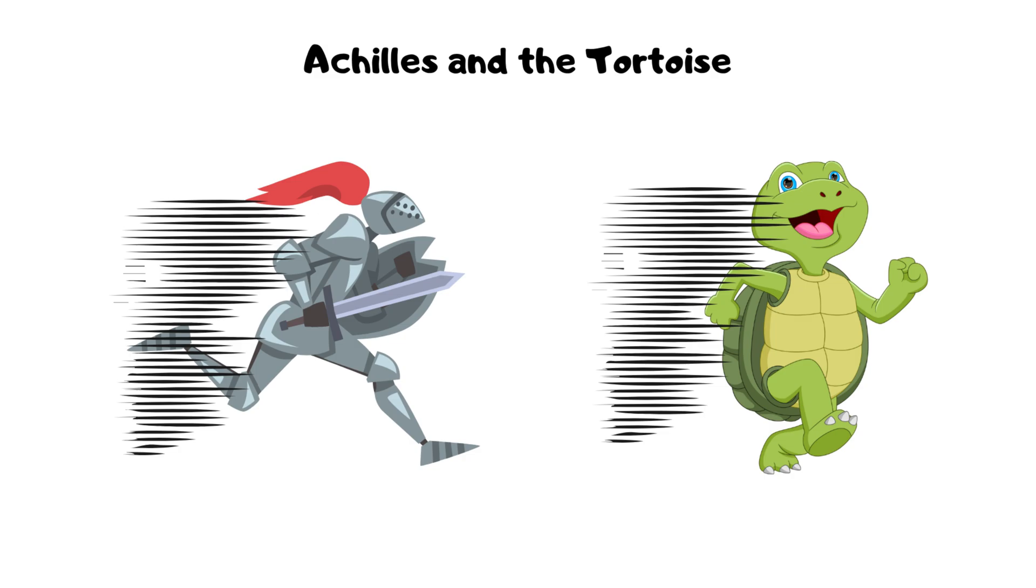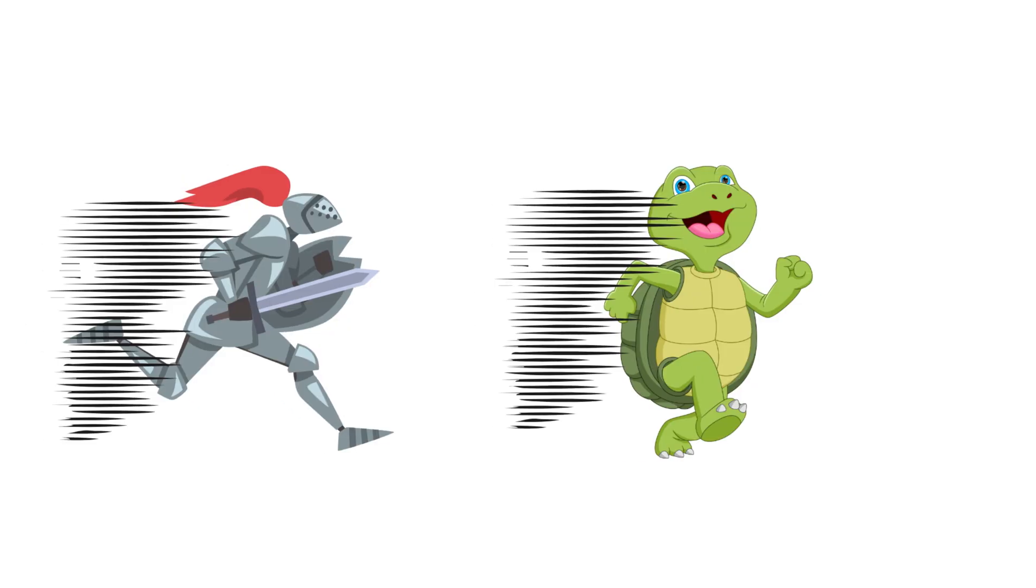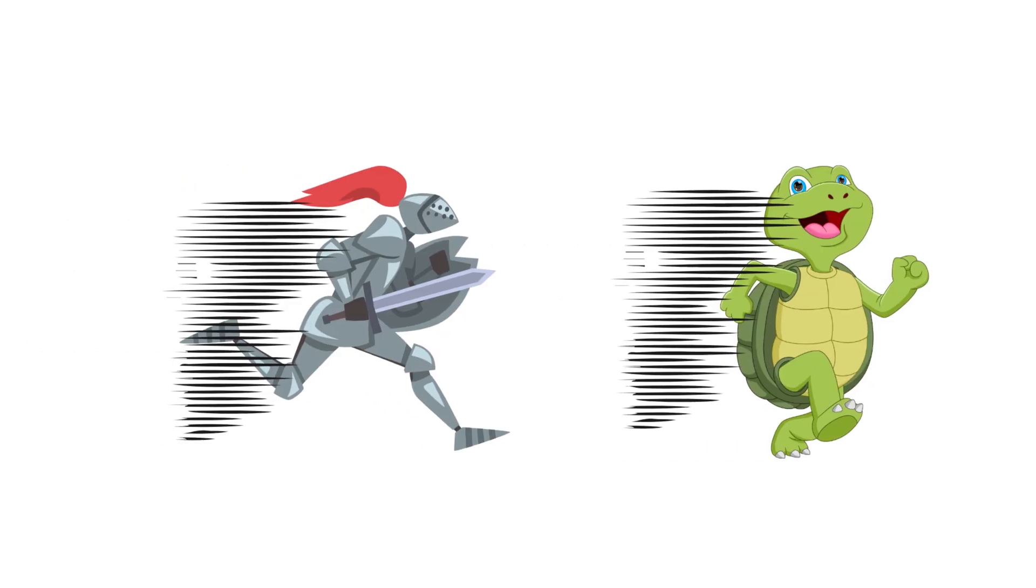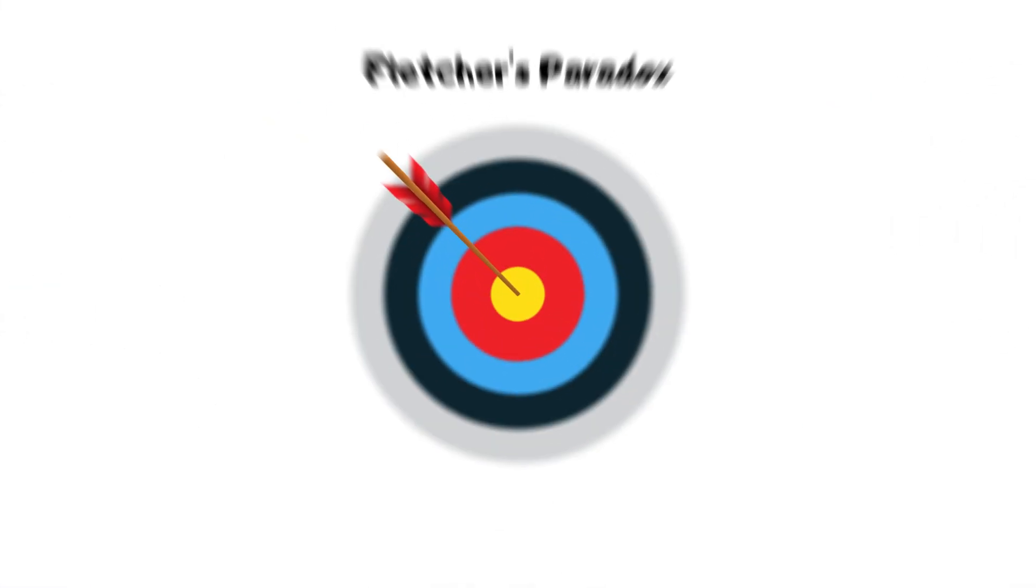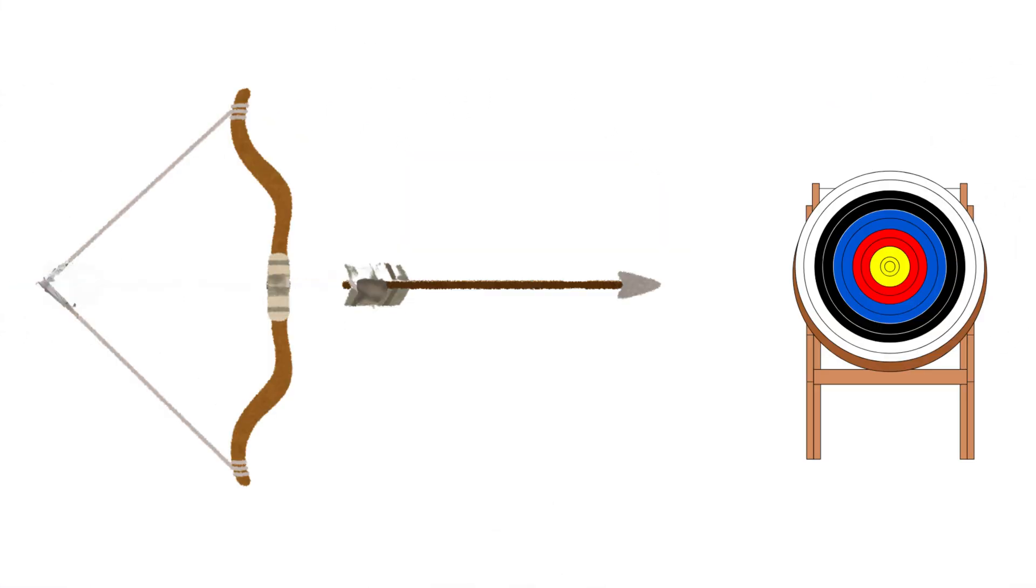Achilles and the tortoise. Achilles can never catch up with the tortoise because every time the tortoise gets a little further. Fletcher's paradox. An arrow never reaches the target because it must always arrive halfway.